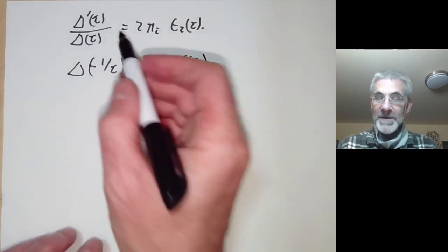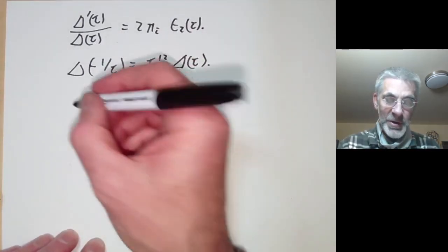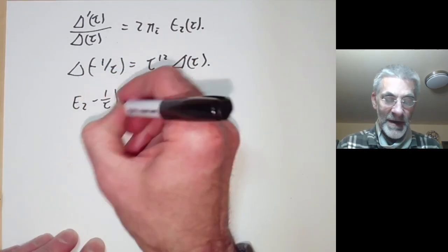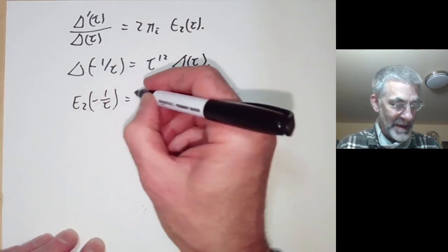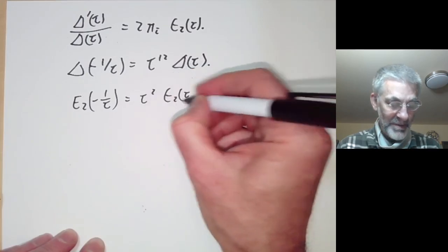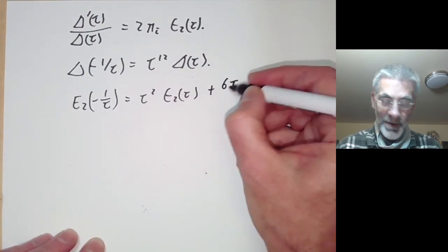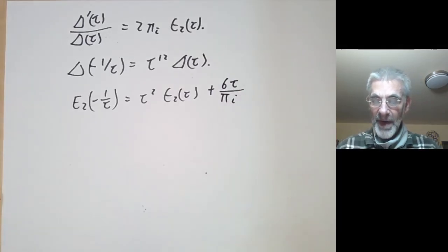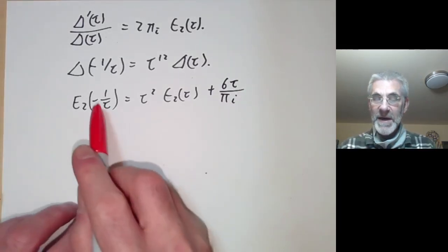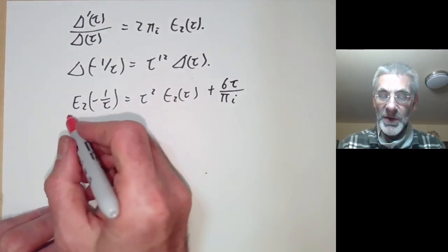From this we can get a functional equation for E2, and we find that E2(−1/τ) equals τ squared times E2(τ) plus 6τ over πi. This makes E2 almost a modular form — if this correction term were not present, E2 would be a modular form of weight 2.